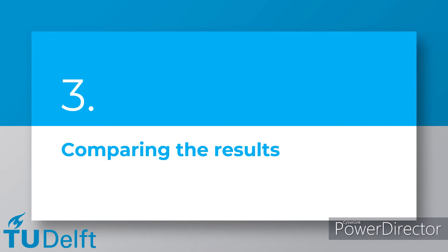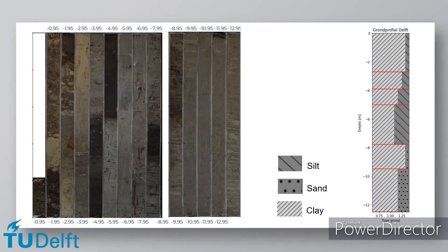Additionally to a CPT experiment, boring samples can be used to validate the CPT results. In the last part of this video, this will be briefly explained. The soil boring can be used to visually identify soil layers — an example of a boring can be seen in the picture. This soil boring was taken in Delft close to the location of the CPT practical. Also see the results from the CPT experiment shown earlier in this video.